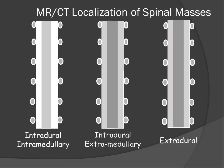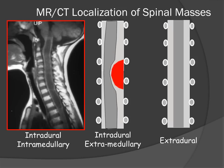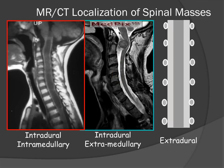Here are three examples of these masses. Expansion of the cord from this cervical spine astrocytoma in a child. Displacement of the cord by this intradural extramedullary soft tissue tumor called a solitary fibrous tumor — but a meningioma would look virtually identical.